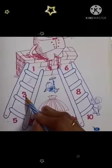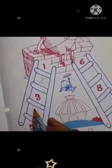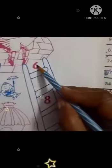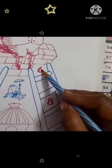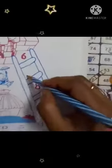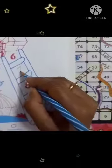What comes just after 3? Right here, 4. What comes just after 6? Right here, 7.